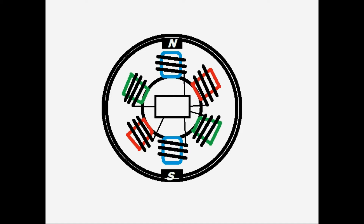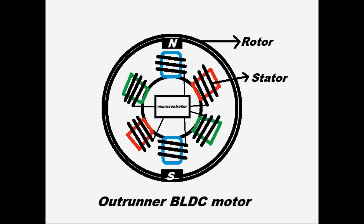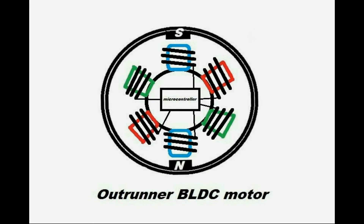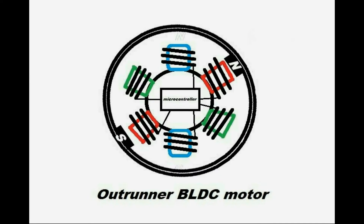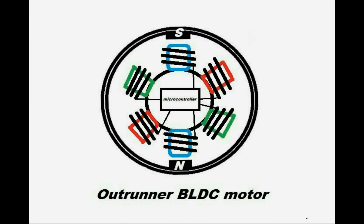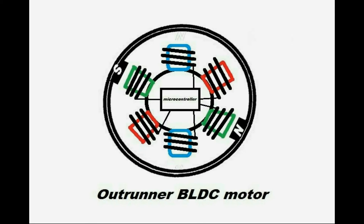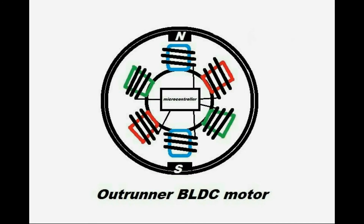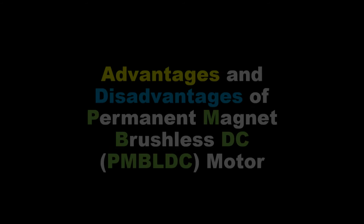With a smaller size, the speed of a BLDC motor is very high. More stator poles means fewer steps, so more precise and smooth control can be obtained.